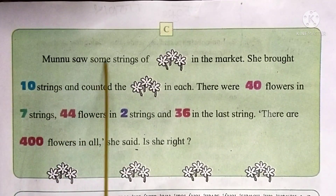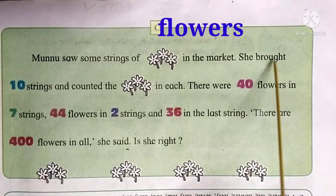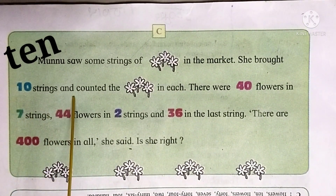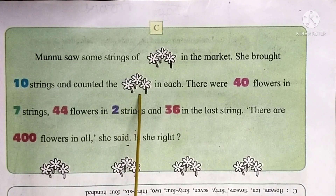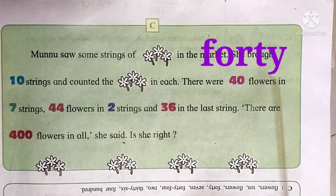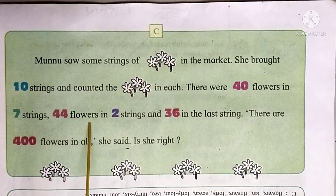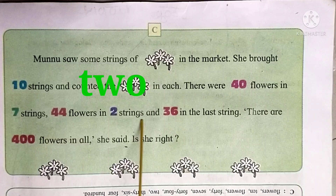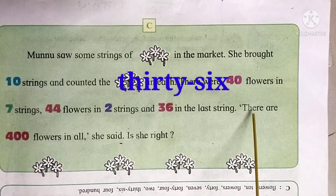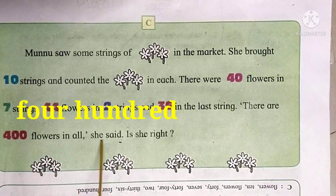Munnu saw some strings of flowers in the market. She brought 10 strings and counted the flowers in each. There were 40 flowers in the 7 strings, 44 flowers in 2 strings and 36 in the last string. 'There are 400 flowers in all,' she said.